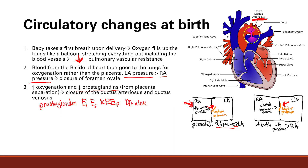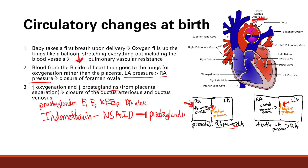If someone has a patent ductus arteriosus because their prostaglandins don't go down, we have a treatment: decrease prostaglandin production with indomethacin. Indomethacin is an NSAID — a non-steroidal anti-inflammatory drug — that blocks prostaglandin production. By blocking prostaglandin production and decreasing prostaglandins, you have nothing keeping that ductus arteriosus open, so you can close the patent ductus arteriosus.